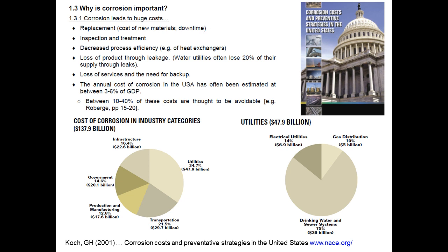In chemical engineering, we also worry about operational expenses. For example, in heat exchangers there is a fouling allowance: rust or oxide corrosion products on the metal surface add to the heat transfer resistance, meaning we need to build a bigger, more expensive heat exchanger, or pump water faster to mitigate the effects of the fouling layer. Other operational costs include downtime for inspecting systems to see whether they need replacement, and the cost of backup systems.